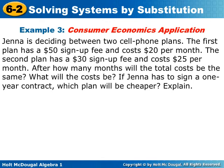So we've got Jenna and she is deciding between two different cell phone plans. The first plan has a $50 sign up fee and costs her $20 a month. The second plan has a $30 sign up fee but costs a little bit more at $25 per month. After how many months will the total cost be the same? What will those costs be? If Jenna has to sign a one year contract, which plan will be cheaper? We have got quite a few things to do in this problem. The first thing that we need to do is write equations.